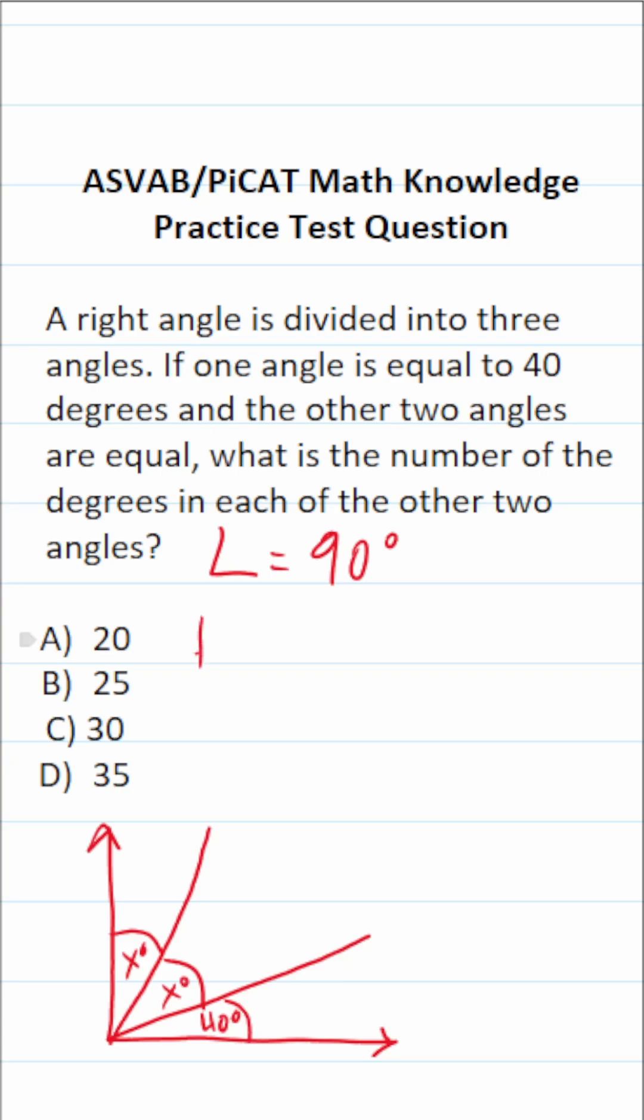So in other words, 40 degrees, that is this angle, plus these two unknown angles, which is going to be plus x plus x, all have to equal 90 degrees. That is the measure of a right angle.